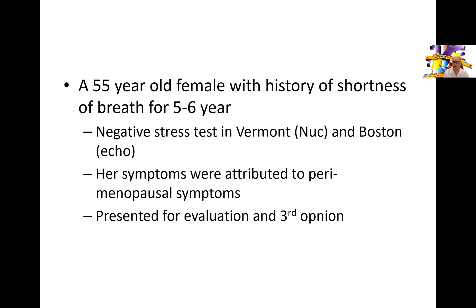First let's start with some history. This is a 55 year old female patient with shortness of breath for five to six years. She was seen in Vermont and she had a nuclear stress test which was normal or at least reported as normal, and then she was seen in Boston and they did a resting echocardiogram which was also reported as normal. A year and a half to two years later she presented to us after her symptoms continued — shortness of breath mainly — and most of her symptoms when she was seen locally were attributed to perimenopausal symptoms. We were actually supposed to deliver a third opinion for her.